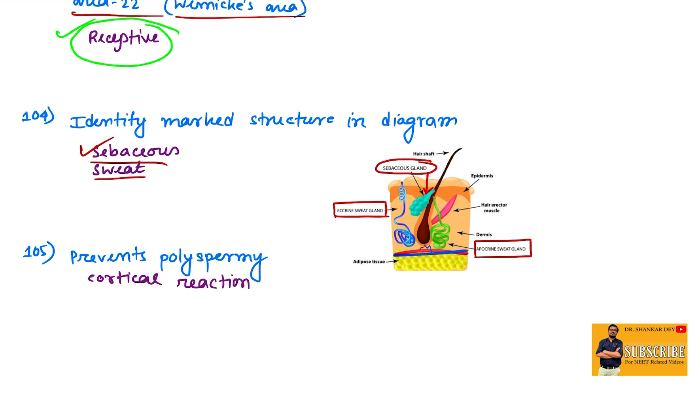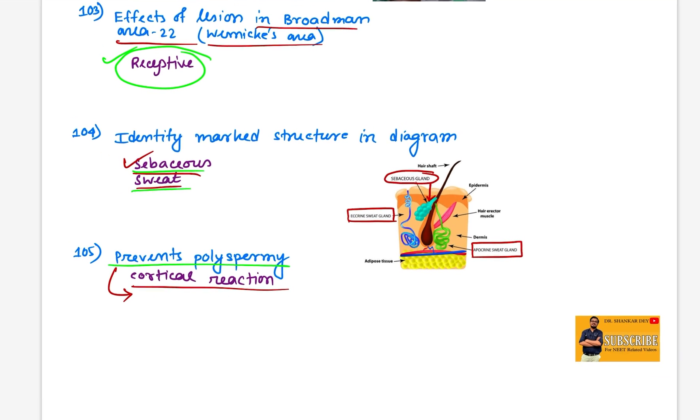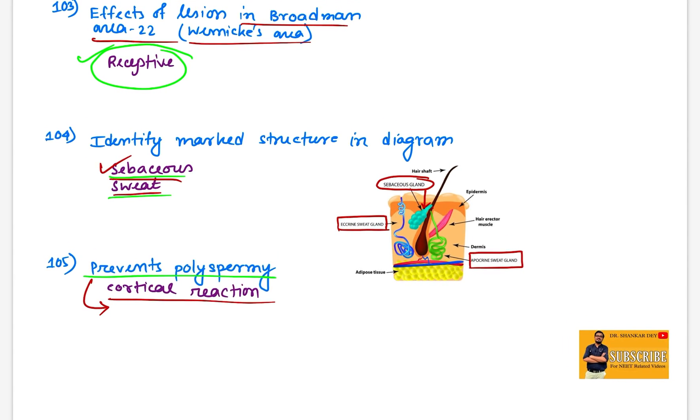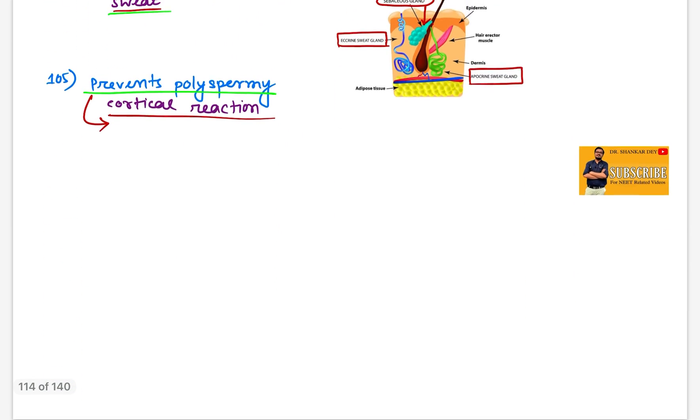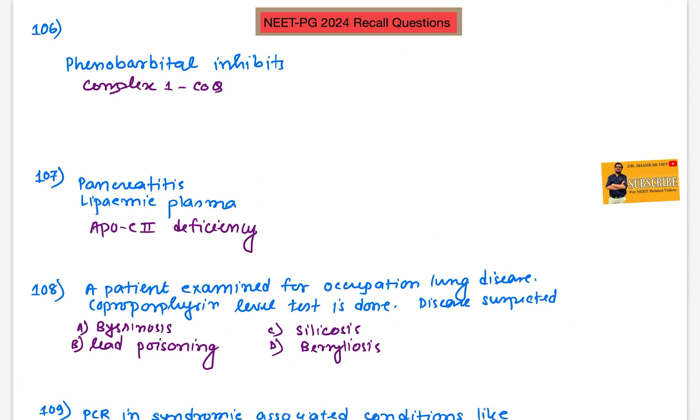So I think this gland identification image was there, so probably sebaceous and sweat gland related question. Kindly let me know in the comment section what was the actual question. Question 105: Prevents polyspermy - this is cortical reaction. After cortical reaction, the ova inhibits further entry of any other sperm.